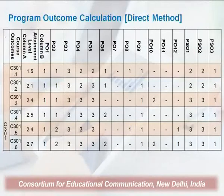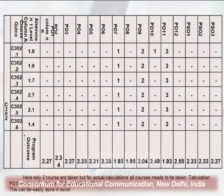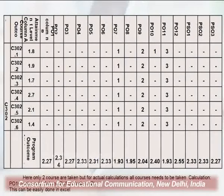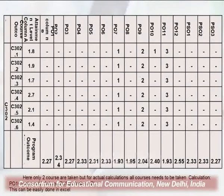On the left-hand side we have the course outcomes, then the attainment levels, then the various programs in horizontal columns — PO1, PO2, PO3 — up to the specific objectives of PSO1, 2, and 3. The matrix is mapped with various course outcomes showing 3 degrees of 1, 2, and 3. The program outcomes total at the bottom shows values like 2.27, 2.34, 2.27, 2.33, and so on. Here only 2 courses are taken, but for actual calculations all courses need to be taken.